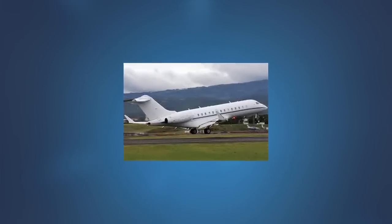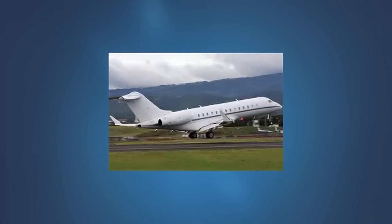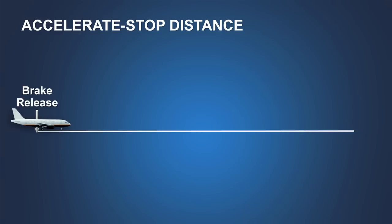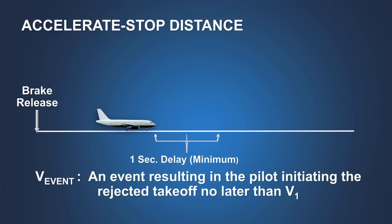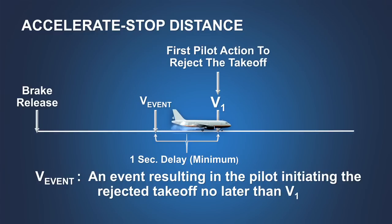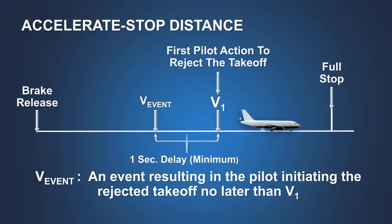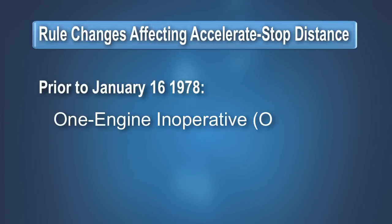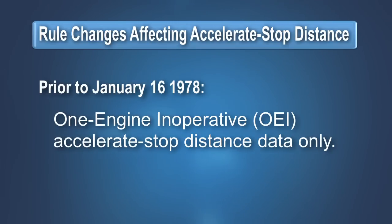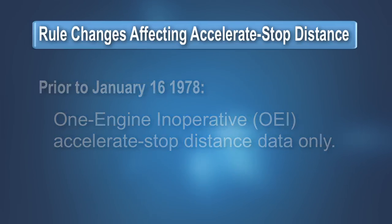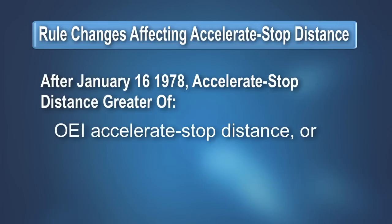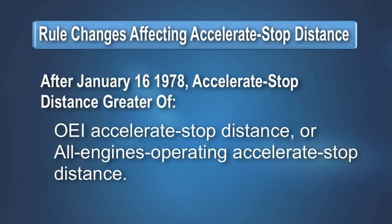Let's look at how declared distances are used with takeoff and landing runway requirements for turbine-powered transport category airplanes. The accelerate stop distance is the distance required to accelerate to a point in the takeoff, then in response to an event, take the first action to reject the takeoff at a speed no greater than V1 and to bring the airplane safely to a stop. Originally, the accelerate stop distance did not include consideration for events other than engine failure that could lead to a rejected takeoff. In 1978, the certification rules were amended to consider both engine failure and non-engine failure scenarios. Accelerate stop distance is now the longer of the distance with one engine failing just prior to V1 or with all engines operating throughout the rejected takeoff.